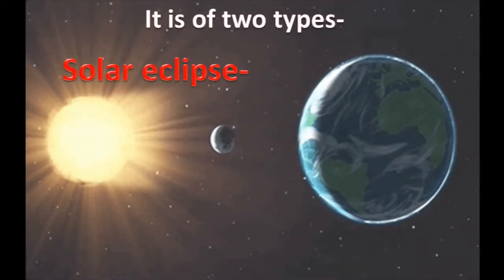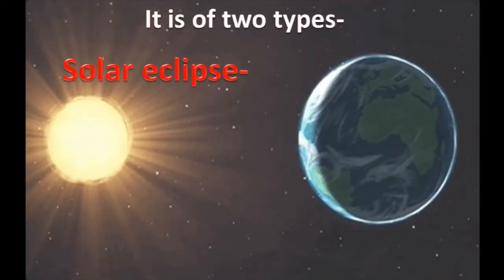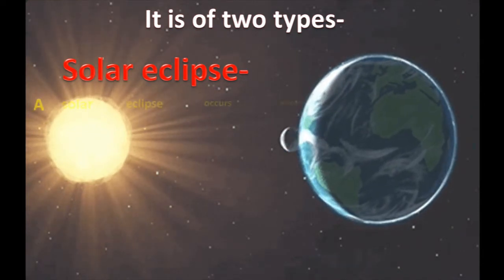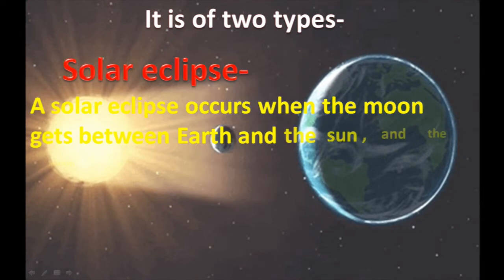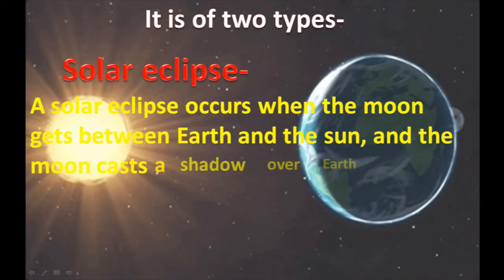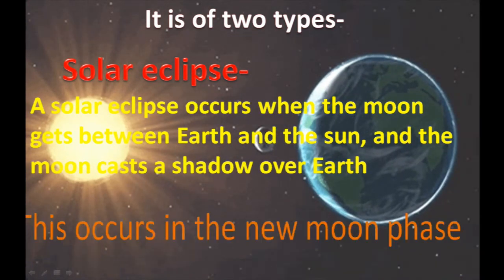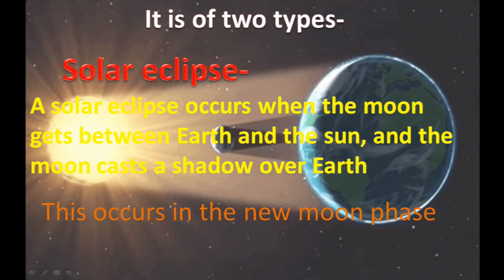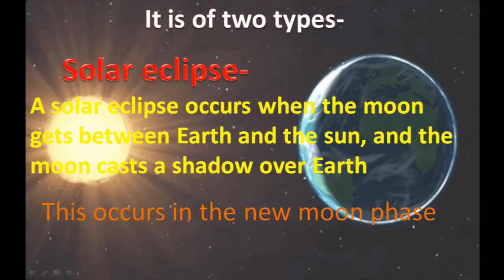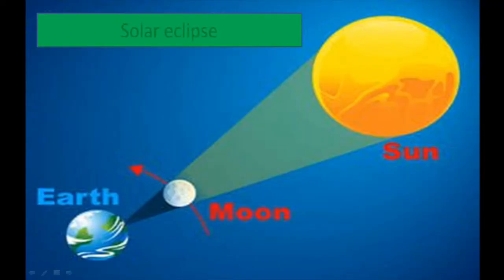It is of two types. Solar Eclipse: A solar eclipse occurs when the moon gets between the earth and the sun, and the moon casts a shadow over the earth. It occurs in the new moon phase. A solar eclipse occurs due to blockage of sunlight by the moon, and as a result, the shadow of the moon forms on the surface of the earth.